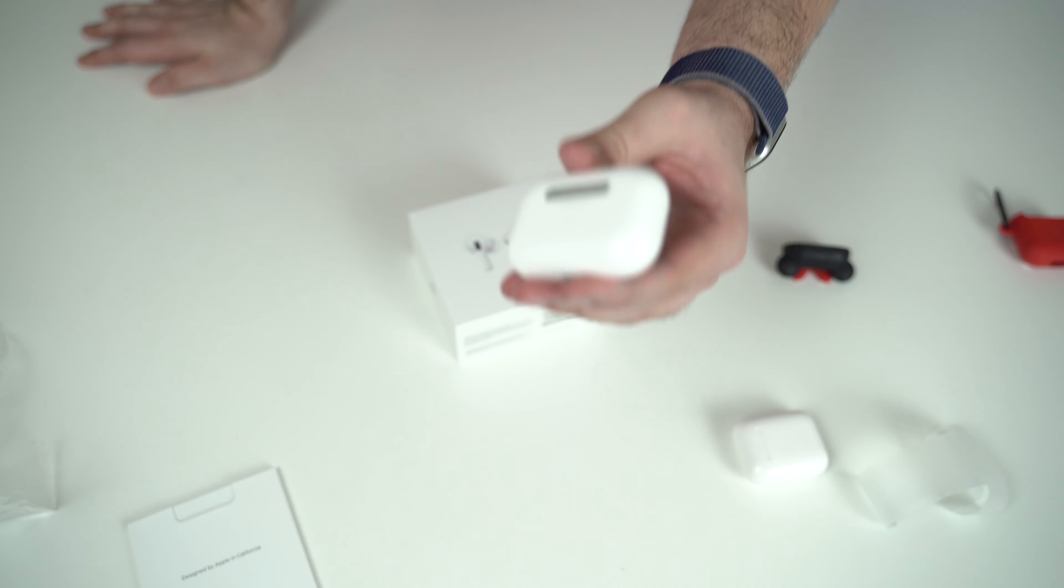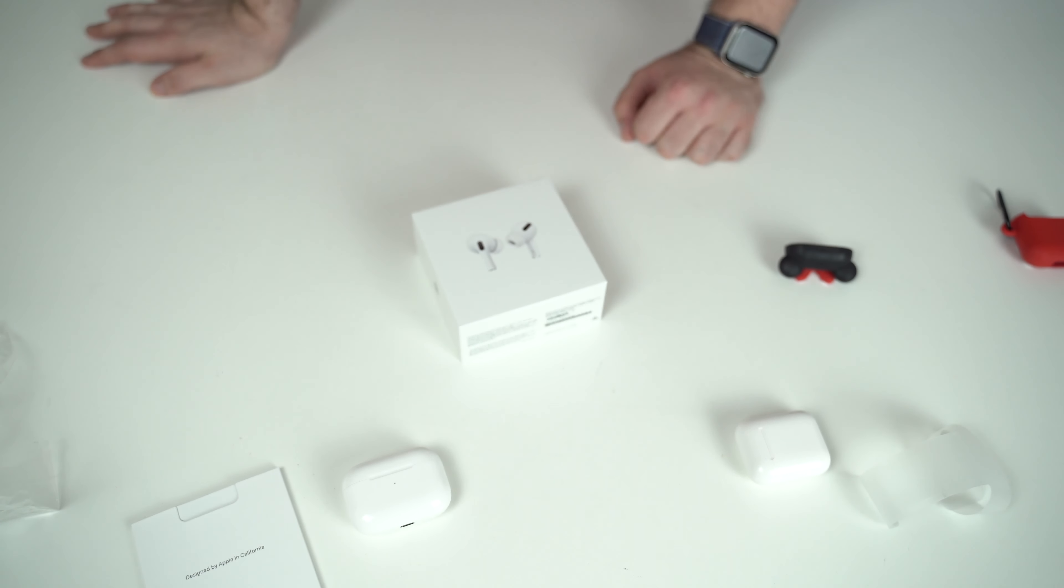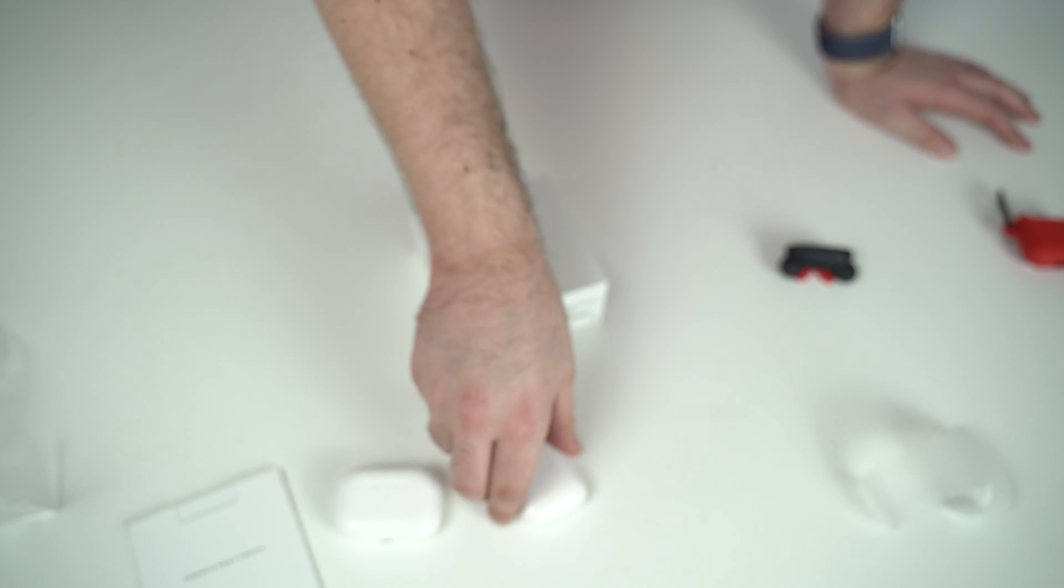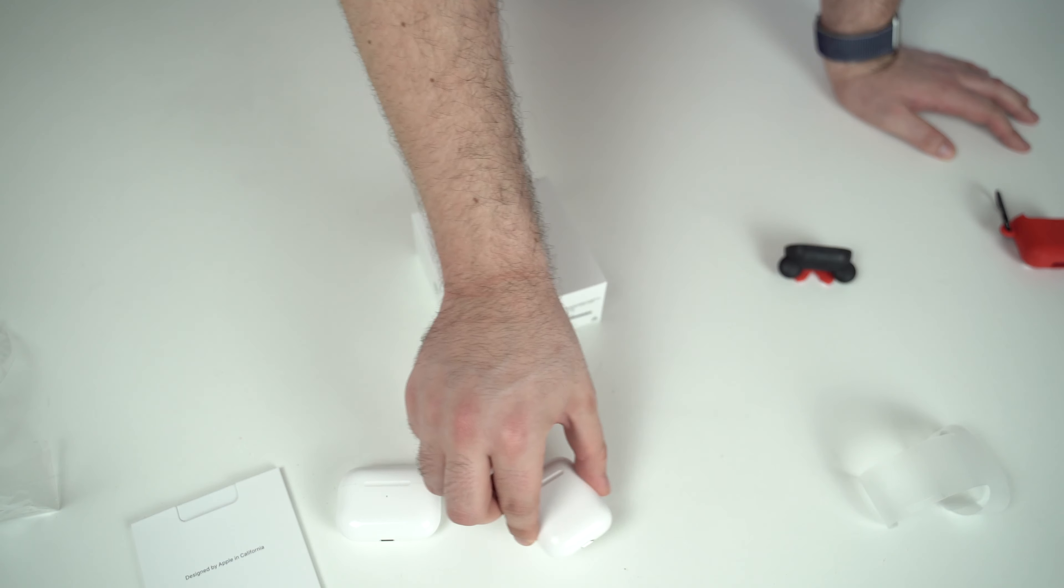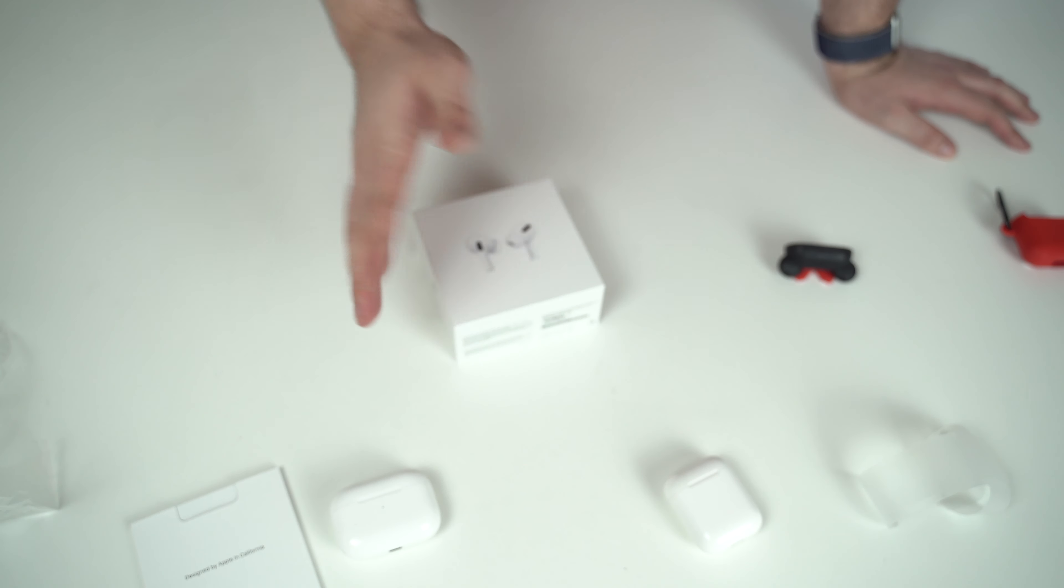This one has the wireless charging built into the case, already comes with it. I'm guessing that's why it has the $400 price tag on it as well. This one, you have to buy the wireless charging case separately. The one that comes with this, this is the AirPods Gen 2 by the way, so it's not even the first gen, it's Gen 2. So this one, you have to buy the wireless charging case separately and then you can charge wirelessly. The AirPods Pro is already included. So I guess that's good.